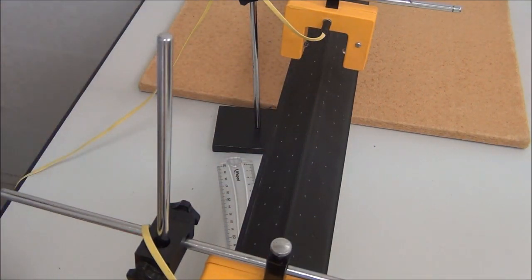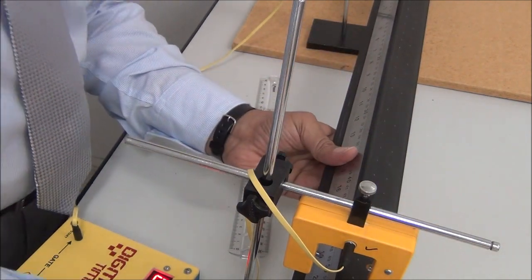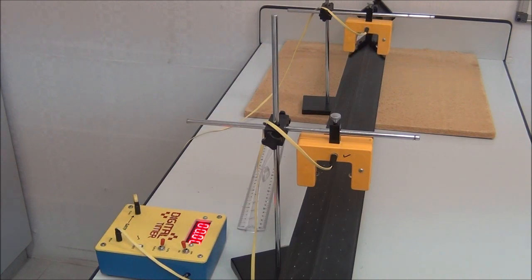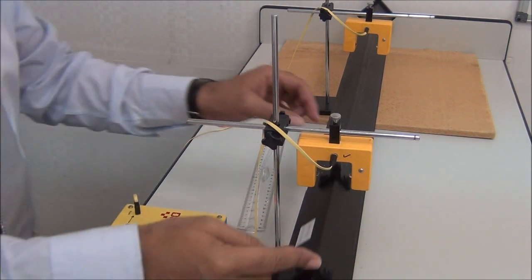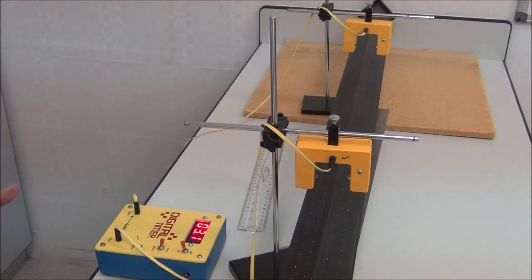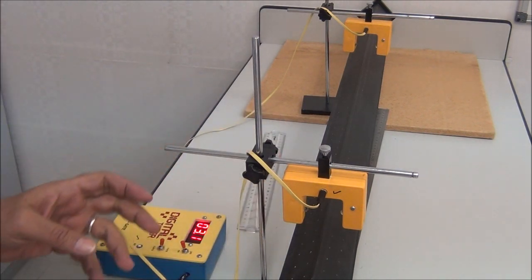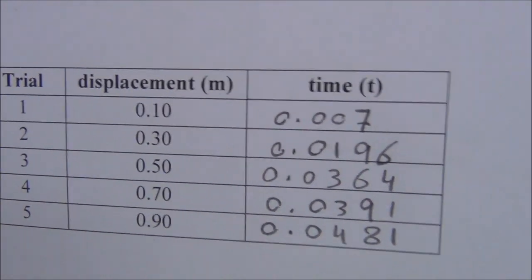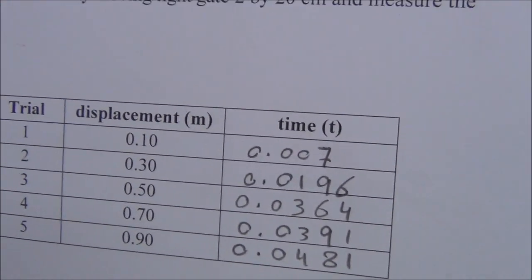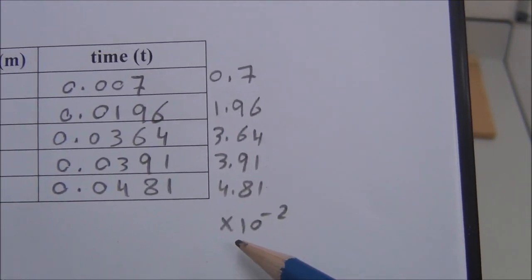We increase the distance between the two sensors to 50 centimeters — it is exactly 50 centimeters — and measure the time, repeating three times to take the average. Then we increase the distance to 70 centimeters and find the time, and then increase to 90 centimeters and find the time. Since the time values are very small, when we plot the graph it is better to multiply them by 100, then divide by 100 on the graph.